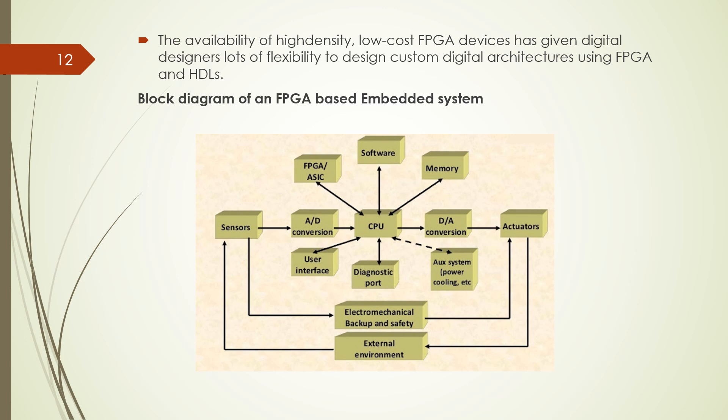You have the user interface and diagnostic port, auxiliary systems, and electromechanical backup safety elements. For the processor, there is memory and the software part. Execution produces the output data, which is again converted to an analog signal and given to actuators. This is the basic block diagram of an FPGA-based embedded system design.